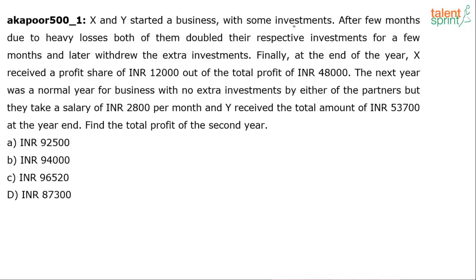X and Y started a business with some investments. After a few months, due to heavy losses, both of them doubled their respective investments for a few months and later withdrew the extra investments. Finally, at the end of the year, X received a profit share of ₹12,000 out of a total profit of ₹48,000. The next year was a normal year with no extra investments, but they each take a salary of ₹2,800 per month, and Y received a total amount of ₹53,700 at year end. Find the total profit of the second year.